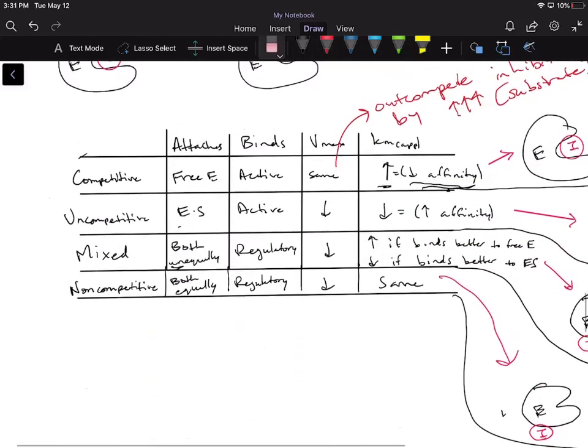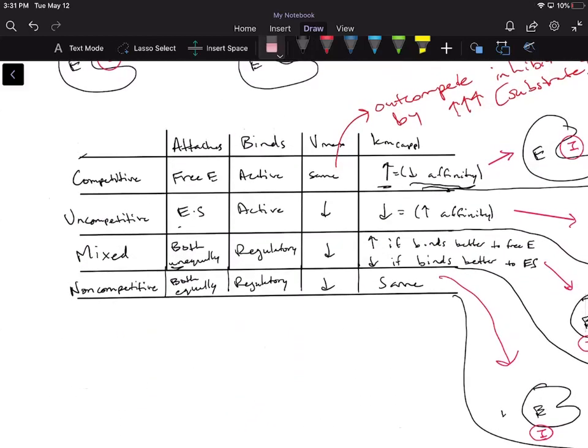Well, let's just go back to that table we drew over here. Notice, for competitive inhibitors, we keep the Vmax the same and we also increase the Km.